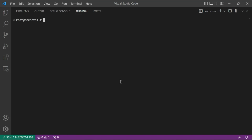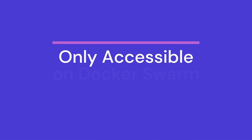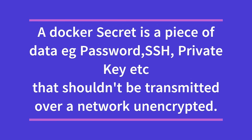Today we're dealing with Docker secrets, something developers commonly have issues with. Docker secrets are only accessible in Docker Swarms — they cannot be used in any other Docker architecture. A Docker secret is something like a password, an SSH key, a private key, or an SSL certificate that should not be passed through the network unencrypted. It has to be stored and transmitted in an encrypted form.